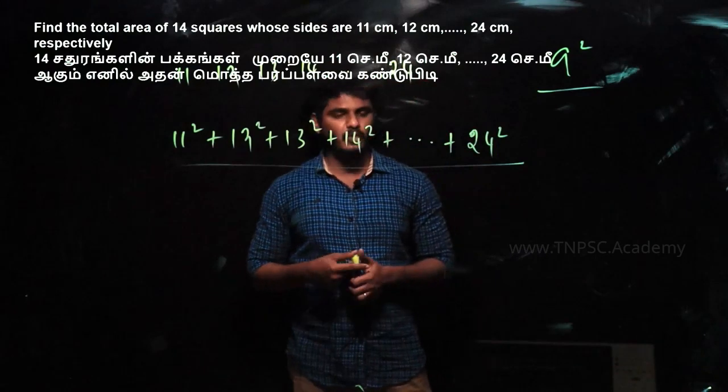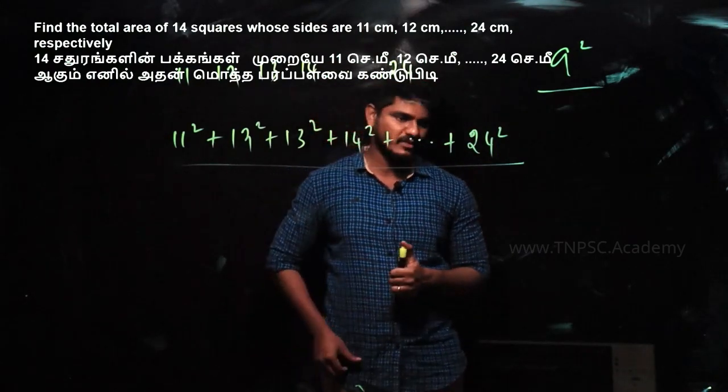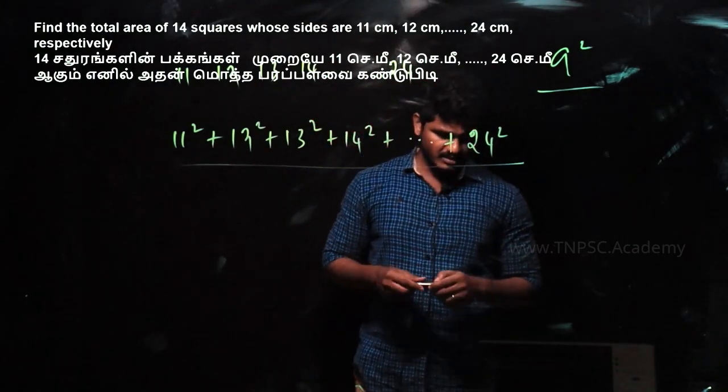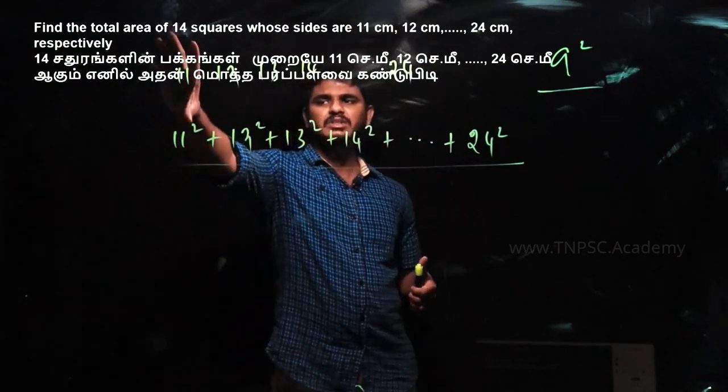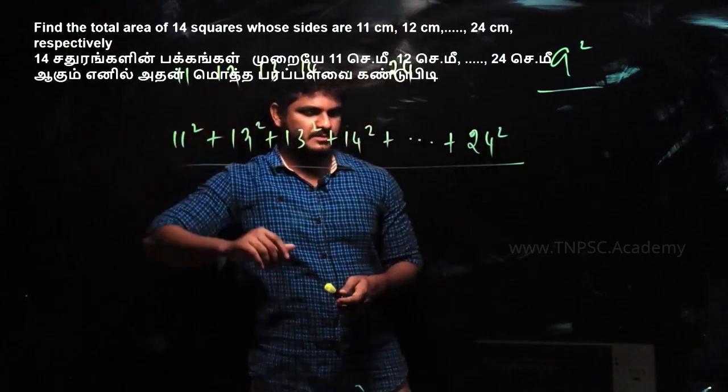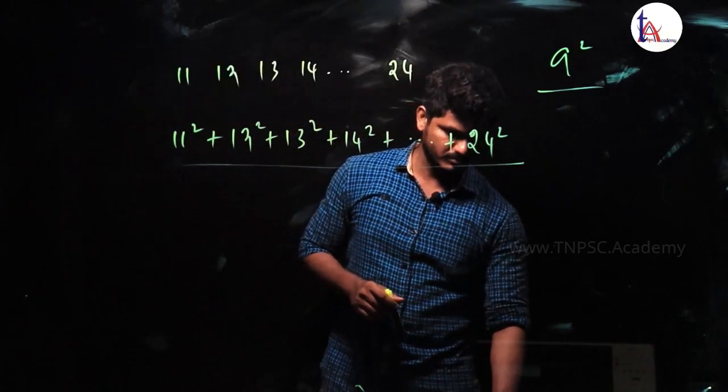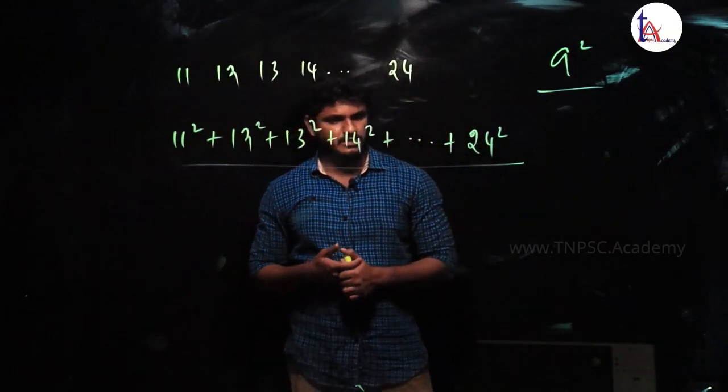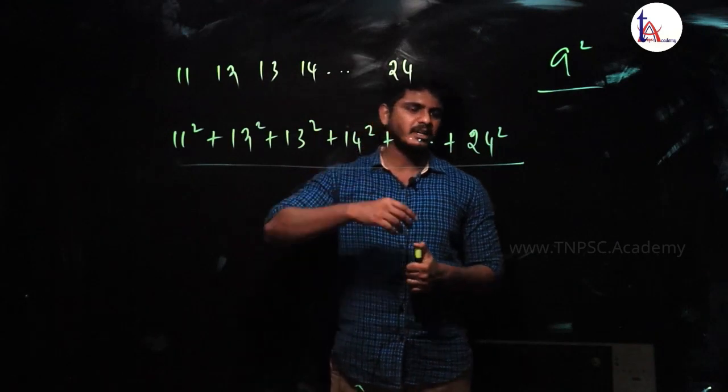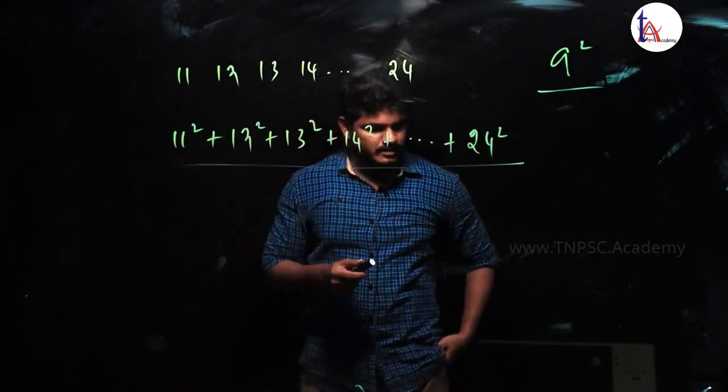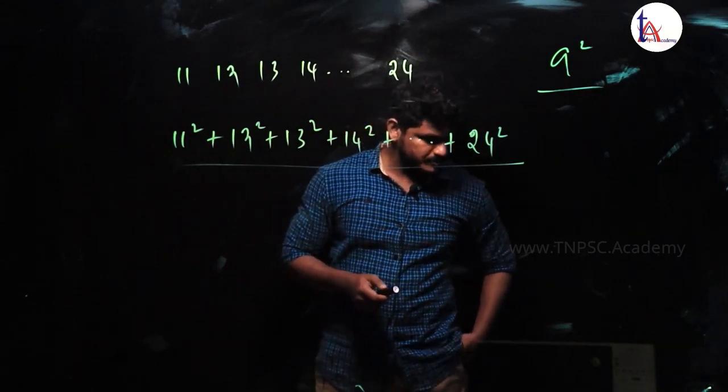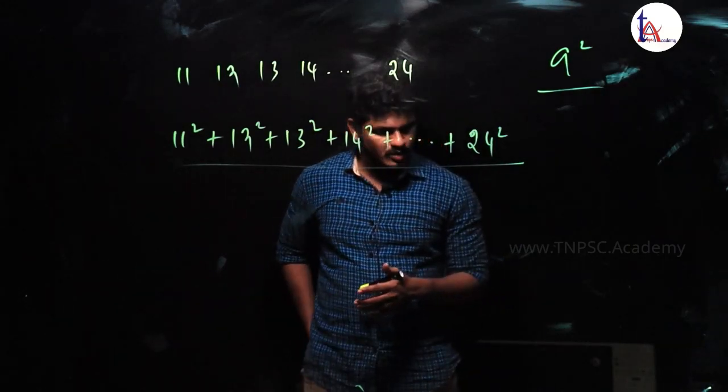Find the total area of 14 square whose sides are 11, 12 and till and so on 24 centimeter. Are you trying? So just ask, the question is the answer? Okay, come on. Now let's answer, how will we solve it? Come on, answer solved and solve.